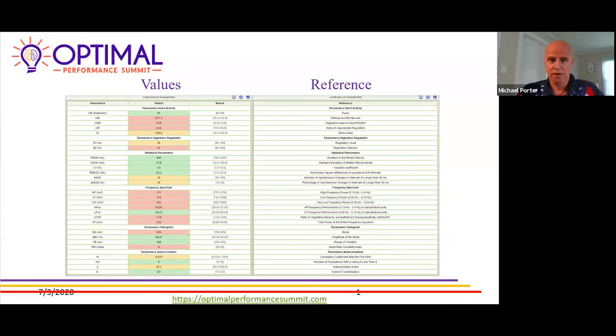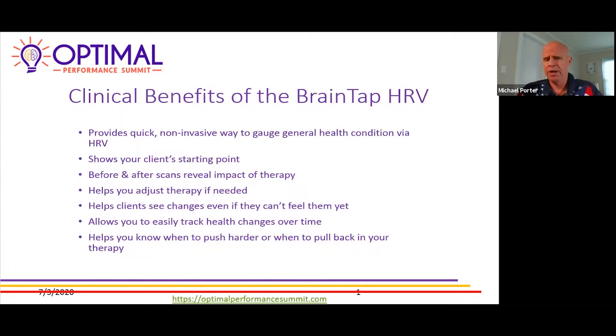For the clinical benefits of the BrainTap HRV, we just covered a few of those. It provides a quick, non-invasive way to gauge general health conditions via the HRV and the digital pulse analysis. It shows the client's starting point. Before and after scans can reveal the impact of the therapy. It helps you adjust therapy if needed. It helps clients see the changes even if they can't feel them yet, and allows you to easily track health changes over time. This is probably the most important one because we showed some people who were really compromised: it helps you know when to push harder or when to pull back on your therapy.